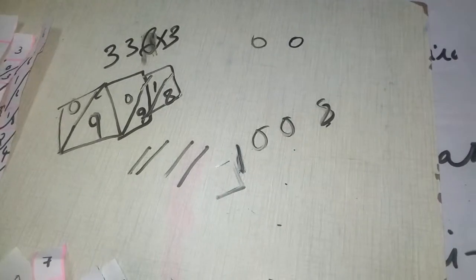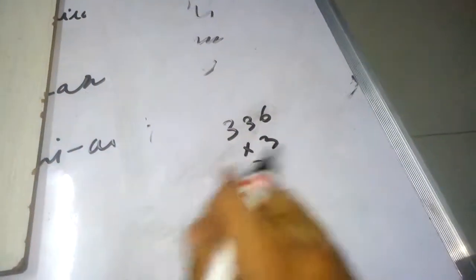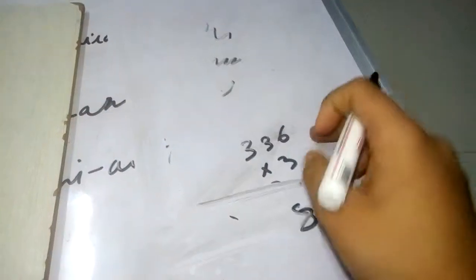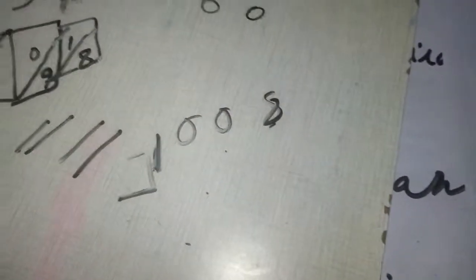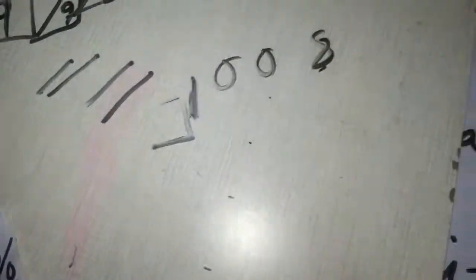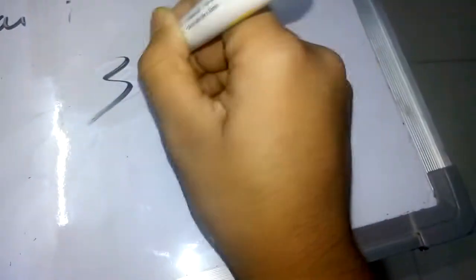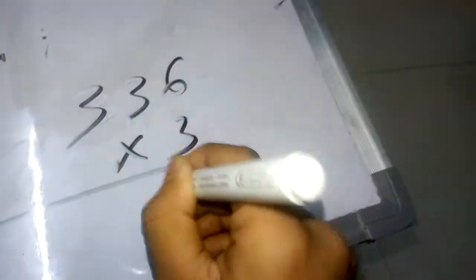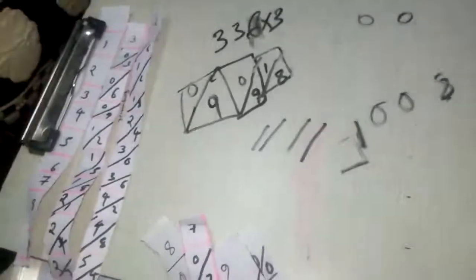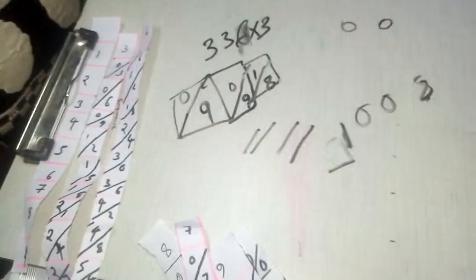Now we can do any kind of multiplications by using this formula. Let us check this answer: 336 times 3. Let us check if 1 0 0 8 is correct or not. It is correct, hence proved.